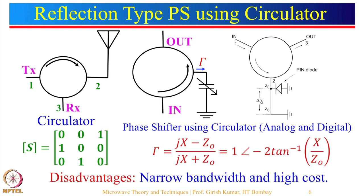Looking at the S-matrix of the circulator: the signal goes from port 1 to port 2, so S21 equals 1. The signal from port 2 goes to port 3, so S32 equals 1. Any input given at port 3 will go to port 1, so S13 equals 1. When we give input at port 1, nothing goes to port 3 and nothing reflects back at port 1 — so S31 equals 0 and S11 equals 0; all the remaining terms are zero for an ideal circulator.